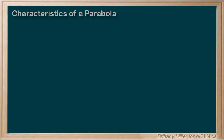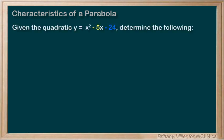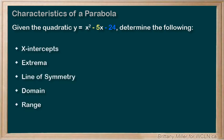All right, new example. Given the quadratic x² - 5x - 24, determine the following, and then we have a very similar list to the one that we did in the last example.